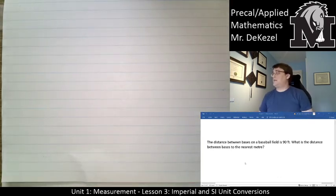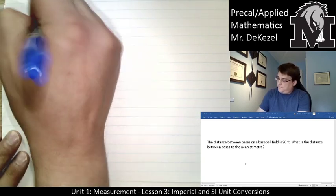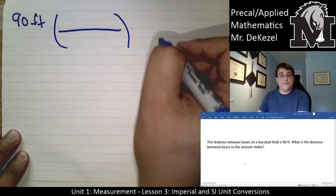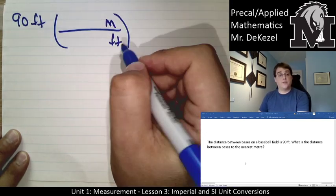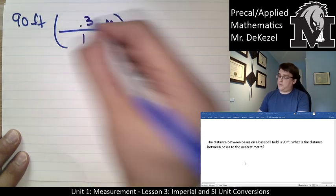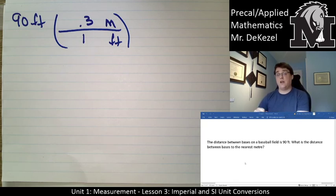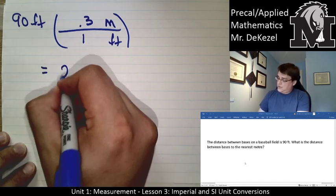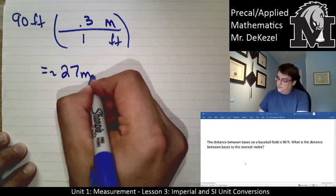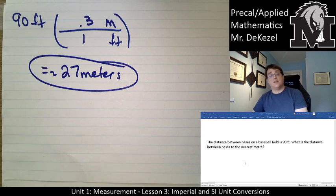Next one: The distance between bases on a baseball field is 90 feet. What is the distance between bases to the nearest meter? This is a simple conversion from feet to meters. We're going to take 90 feet, use our conversion factor—feet goes on the bottom, meters on the top. In a single foot, we have 0.3 meters. 90 times 0.3 gives us approximately 27 meters. So the bases are approximately 27 meters apart.